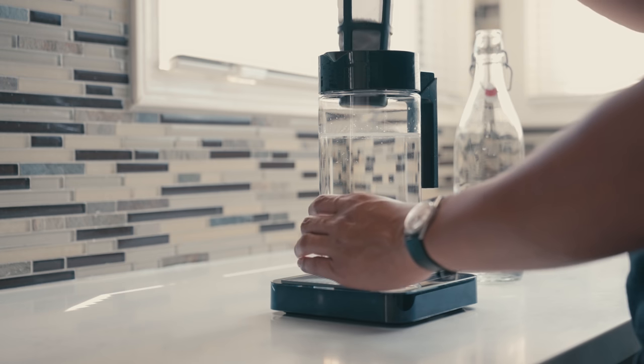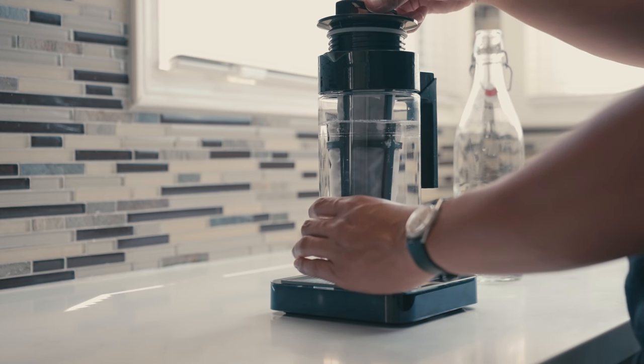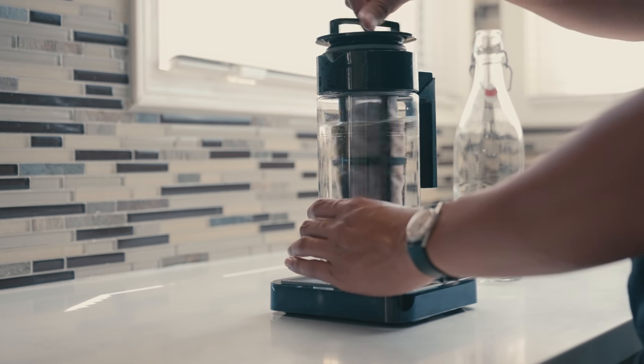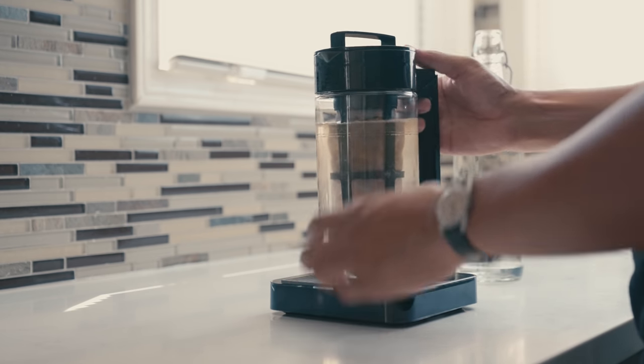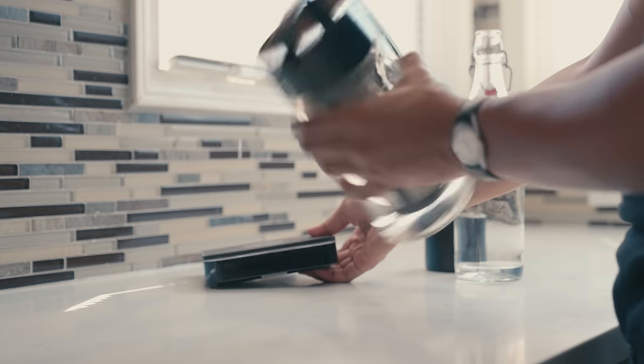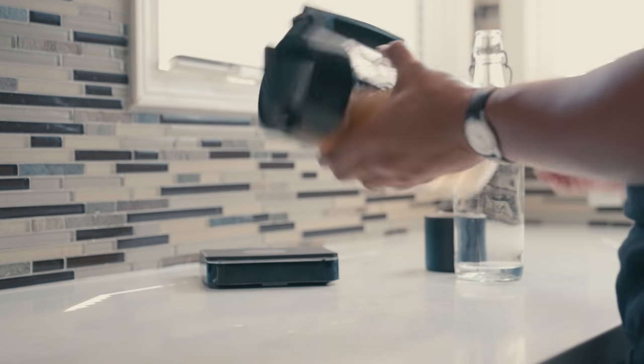Lower the brew basket into the water and close the lid. Finally, give the brewer a couple of inversions to ensure your grounds are fully saturated.